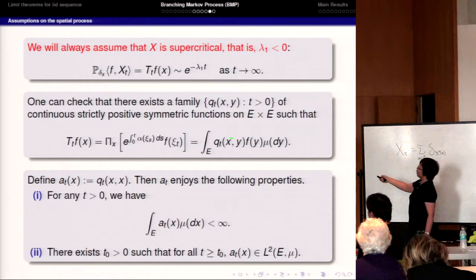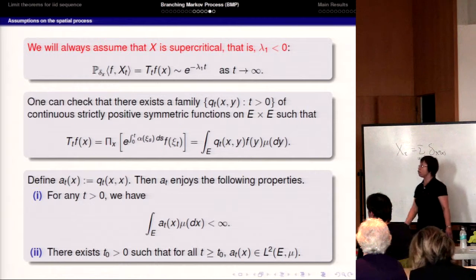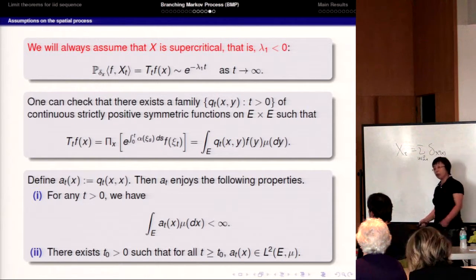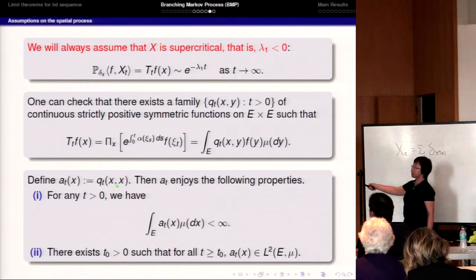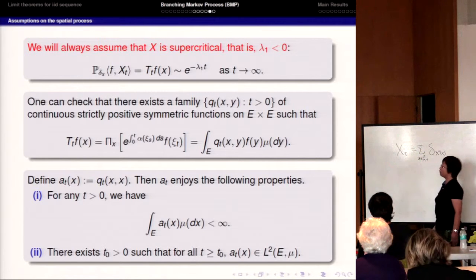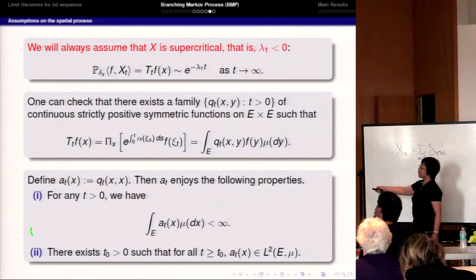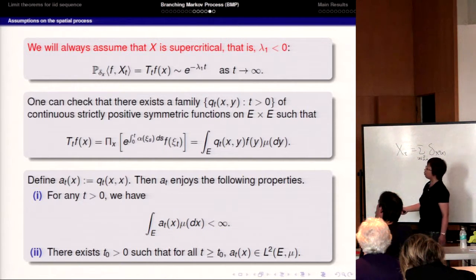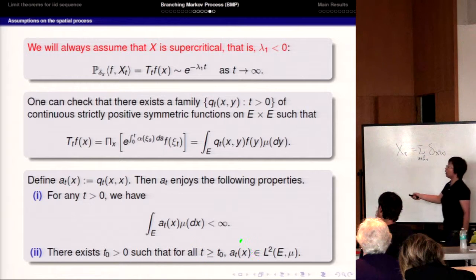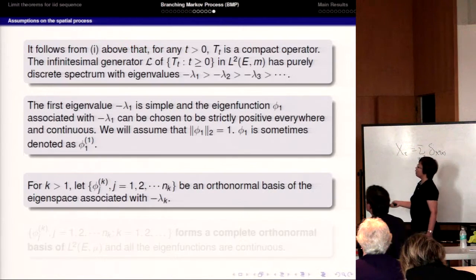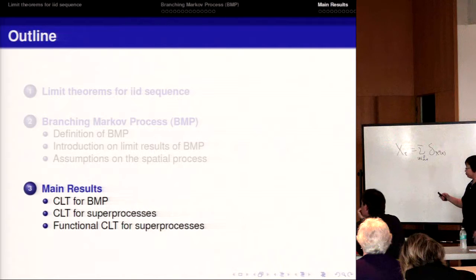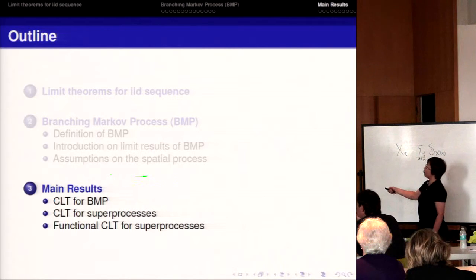The Feynman-Kac transform also has a density q_t. The previous condition on p_t now translates to conditions on the density of the Feynman-Kac transform: A_t(x) = q_t(x,x) satisfies the two conditions — A_t(x) in L^1 for each t, and for some large enough t_0, A_t(x) in L^2.